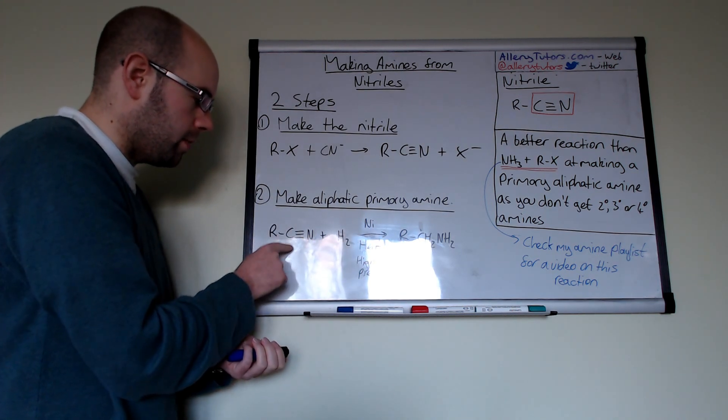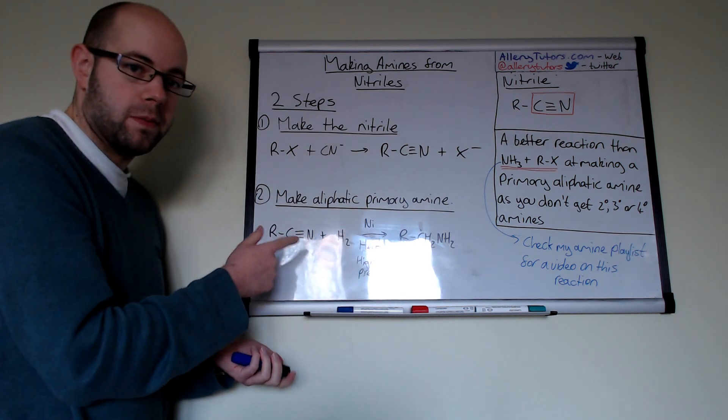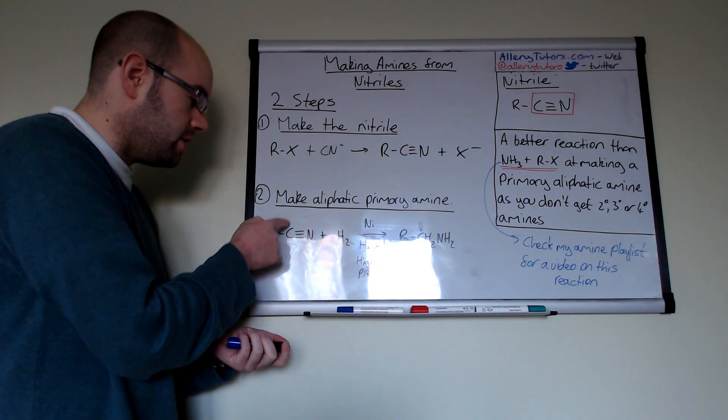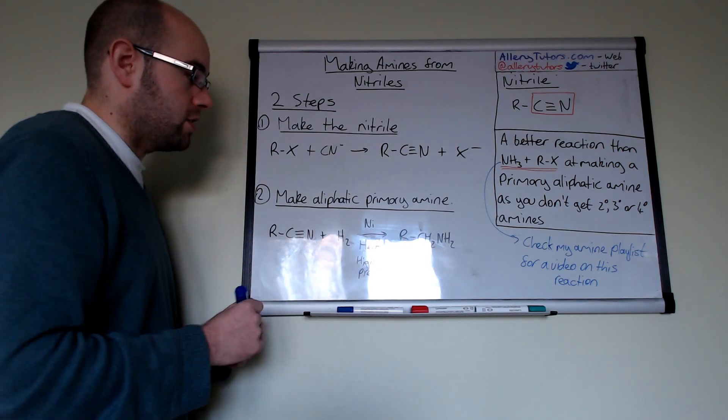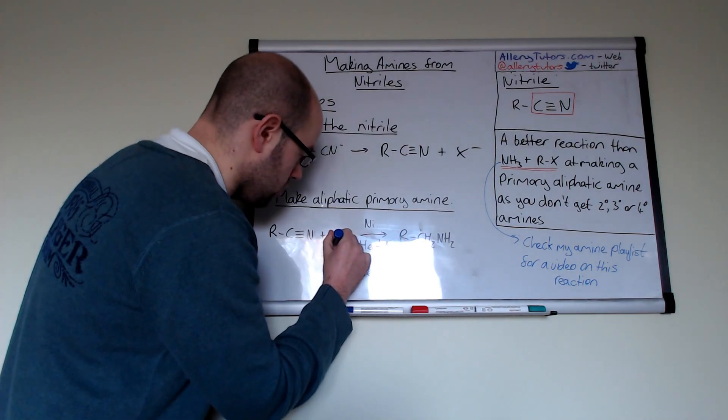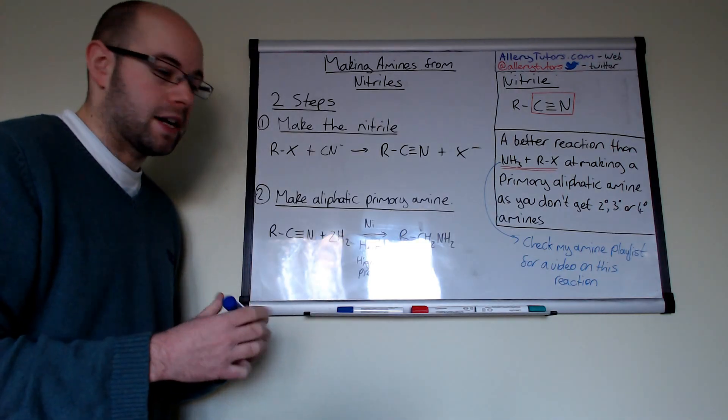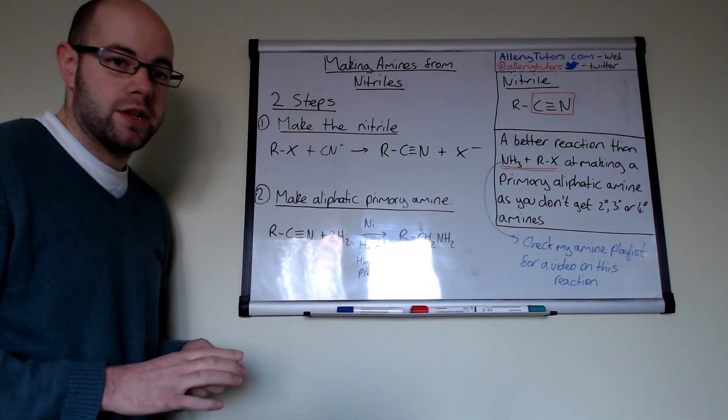because if you're breaking this triple bond past the triple bond then you need two hydrogens on there. So in terms of balancing you need two lots of hydrogen gas for every nitrile that you need.